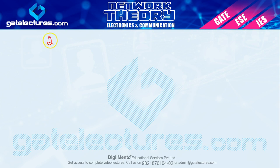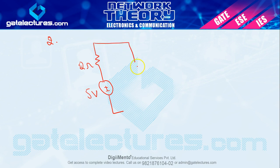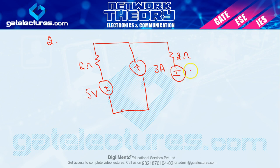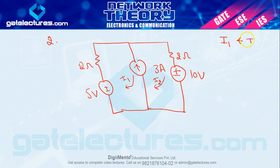Next concept है super mesh का। इसके लिए एक question consider करते हैं: there is a voltage source of 5 volt, a resistor of 2 ohm, a current source of 3 amperes, again a resistor of 2 ohm and a voltage source of 10 volts। नीचे वाला ground है।